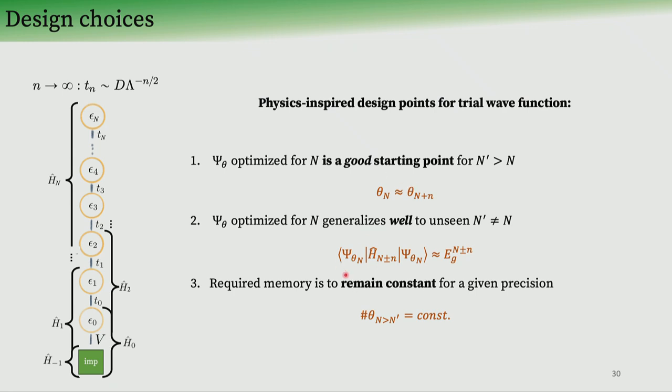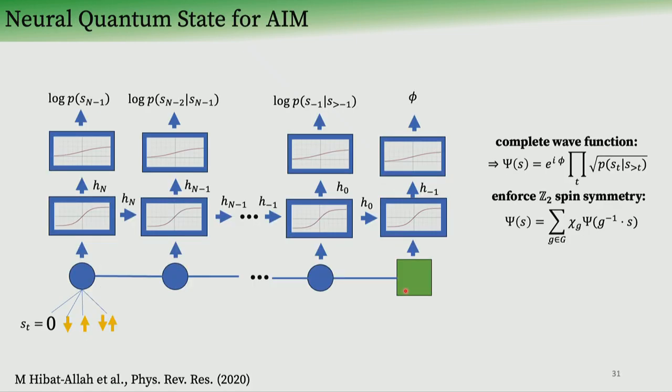So next, an optimized wave function for a certain length of the Wilson chain should generalize to shorter and longer Wilson chains. And finally, similar to the numerical renormalization group, we ask that the number of parameters of the variational wave function does not increase beyond a certain length of the Wilson chain, so that it saturates for a given target precision. All right, so those are our design criteria, so let's go and look at the network that promises to satisfy all of them, and that is the recurrent neural network.